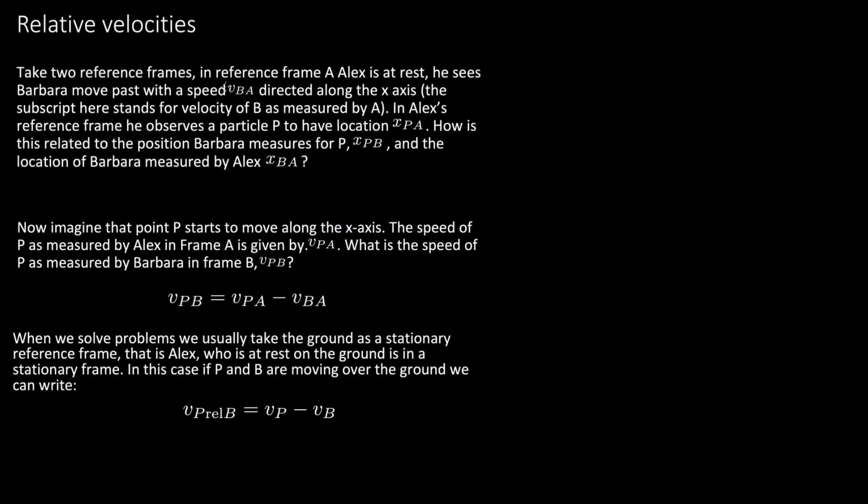We'll be considering two reference frames, and in reference frame a Alex is at rest. So let's draw a little diagram: here's the floor, here's Alex, he's standing here in reference a very stationary. Now he sees Barbara move past with a speed vba. So here's Barbara, she's moving this way with speed vba directed along the x axis.